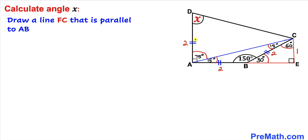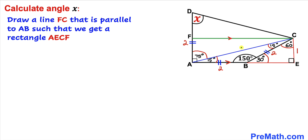In the next step, let's draw a line FC where point F is on line AD, such that FC is parallel to line AB. This gives us rectangle AECF, meaning angle AFC is 90 degrees and angle EFC is 90 degrees as well.